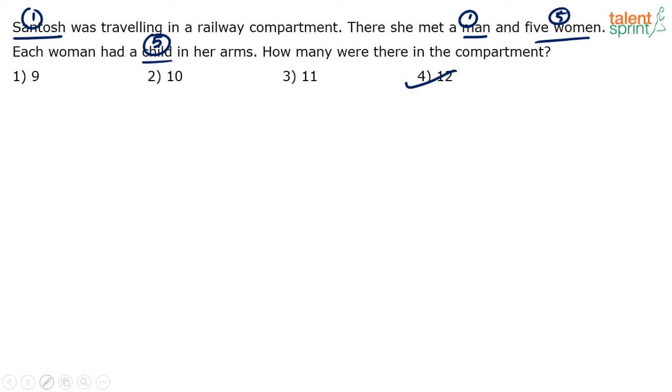Be careful. Many of us mark the answer as option 3, which is wrong. We fail to count Santosh. Generally when he says how many are in the compartment, we start from this man and five women, which is 6. Each woman had a child, so 6+5=11. But who will count Santosh? Santosh is also traveling in that compartment. Don't get too excited and mark the wrong answer in a hurry. Option 4, 12, is the final answer.